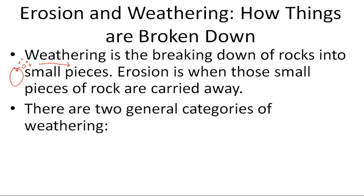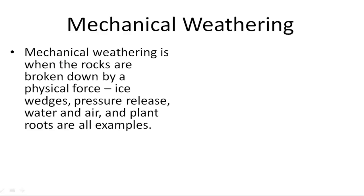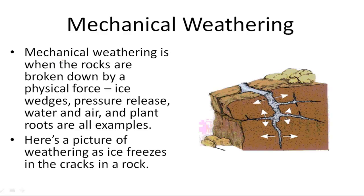There are two general categories of weathering: mechanical weathering and chemical weathering. Mechanical weathering is when the rocks are broken down by a physical force — like ice wedges, pressure release, water, air, and plant roots are all examples of mechanical weathering. Here's a picture of weathering as ice freezes in the cracks of a rock.